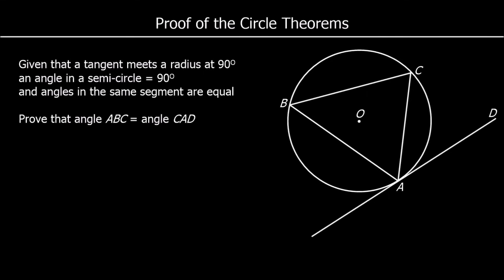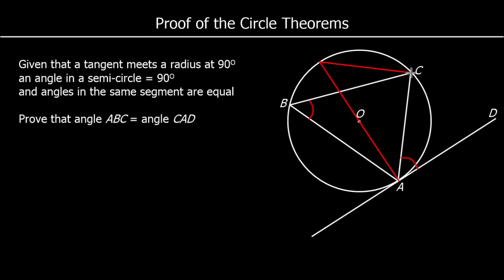We have one more proof. Given that a tangent meets a radius at 90 degrees, an angle in a semicircle is 90 degrees, and angles in the same segment are equal — prove that angle ABC equals angle CAD. This is the alternate segment theorem. To prove this, we draw a diameter from A going through the centre of the circle, and we join the point where that diameter meets the other side of the circle to point C.